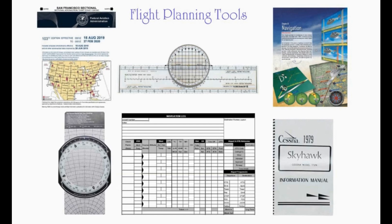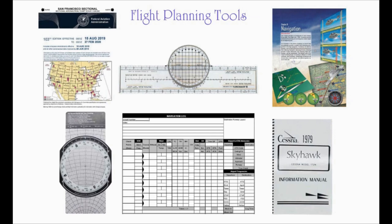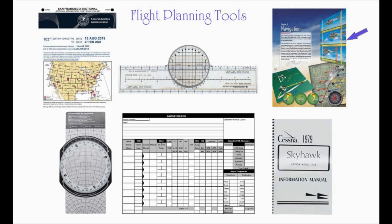With that I will start a new series using the tools that you see here. First off we are going to need a current sectional chart. We will need a plotter, an E6B flight computer, a POH or pilot operating handbook for the aircraft that you will be flying. I will be using a Skyhawk 172N, and we will be needing a navigation log where we will record all the information needed to complete a flight plan. I'm also suggesting that you get the Pilot Handbook of Aeronautical Knowledge Chapter 16 on navigation.